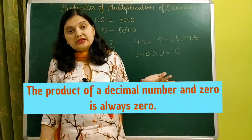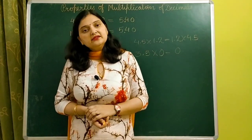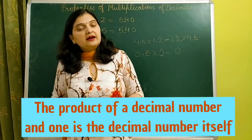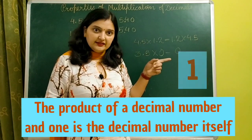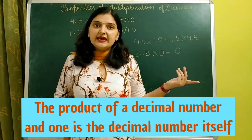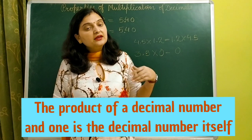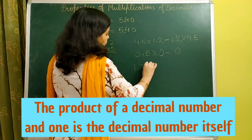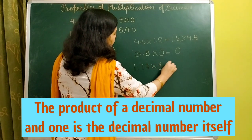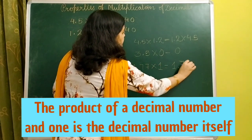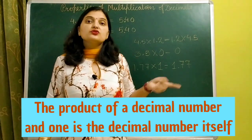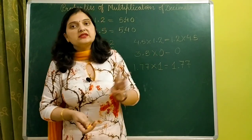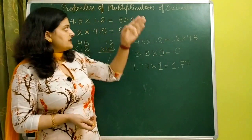The third property is: whenever we multiply any decimal number by one, our result will remain the same — we get the same number again. For example, if we multiply 1.77 by one, we get 1.77. So this is the third property. These are the three basic properties of multiplication of decimal numbers.